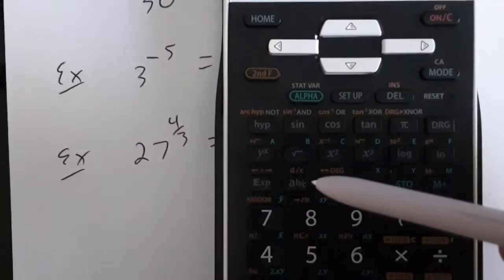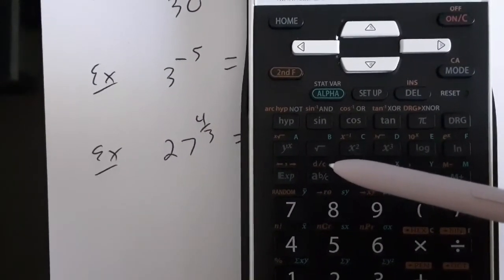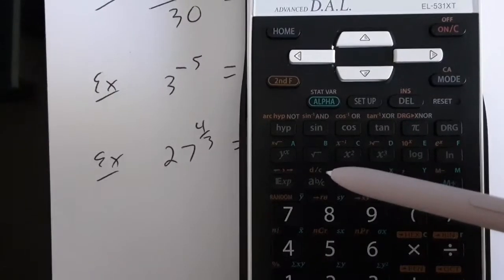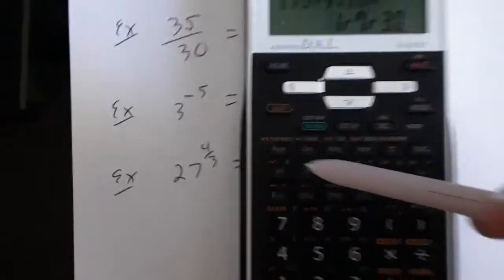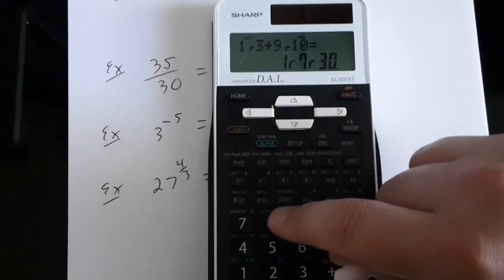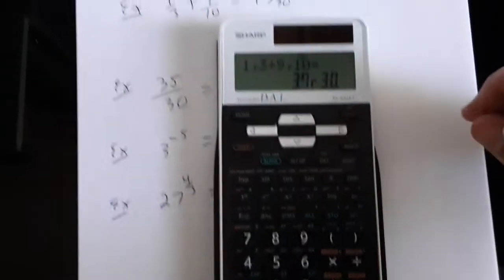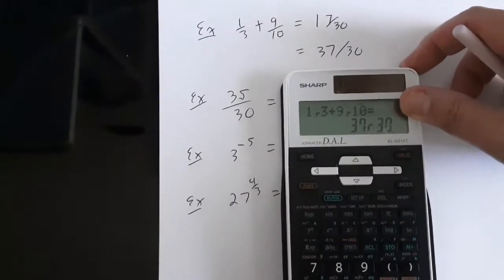Taking a back look here at the fraction button, you can see right here above it, as a second function, is D over C. That's the function I use to turn things into an improper fraction. So by touching second function, fraction button, now it gives me my answer as an improper fraction, 37 over 30.